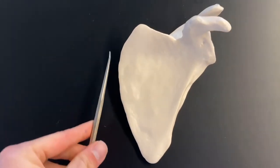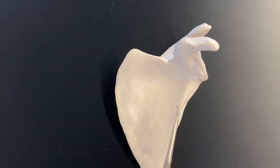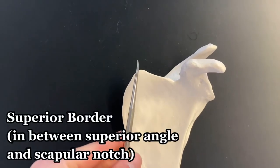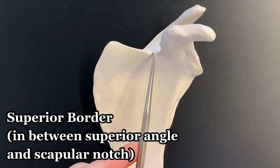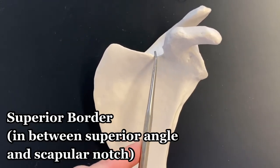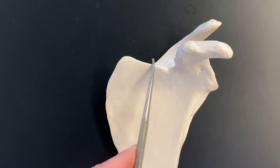If we've got a medial border and a lateral border, we also have a superior border. Which is in between the superior angle and that scapular notch right here. So this would be the superior border.